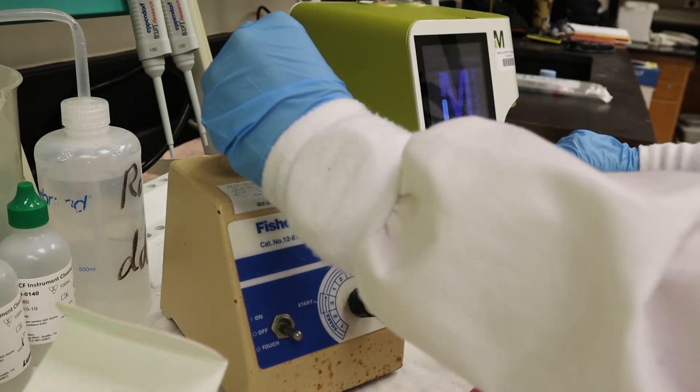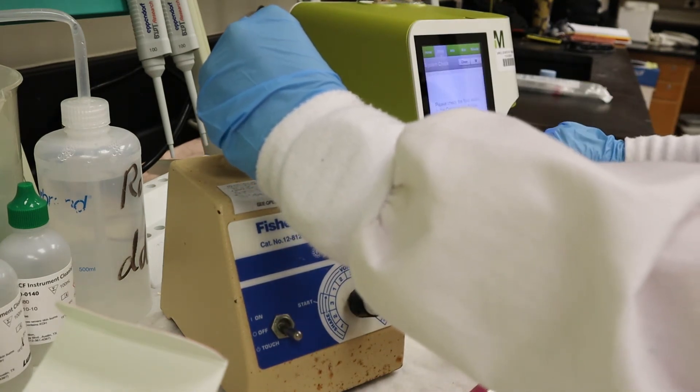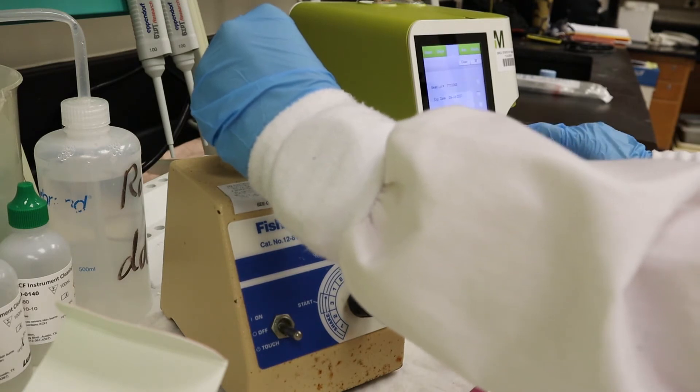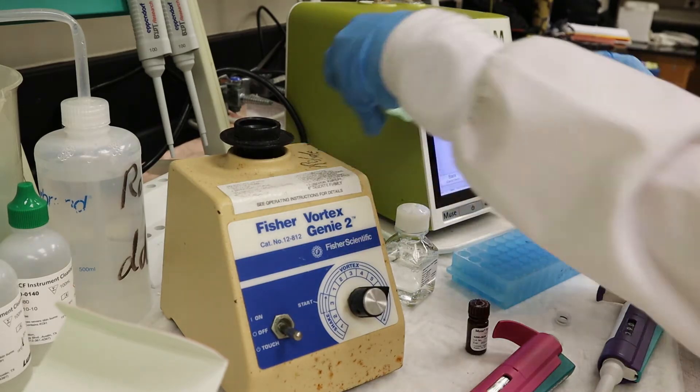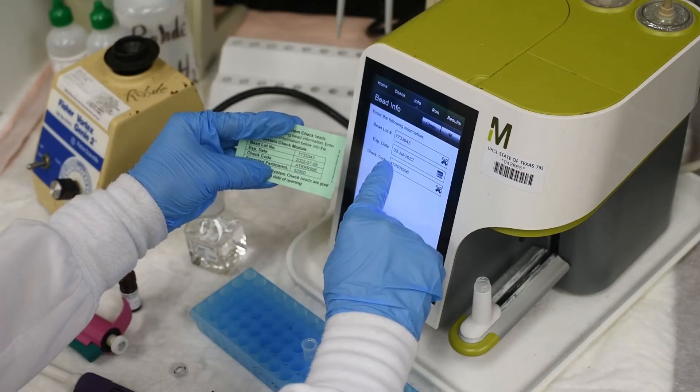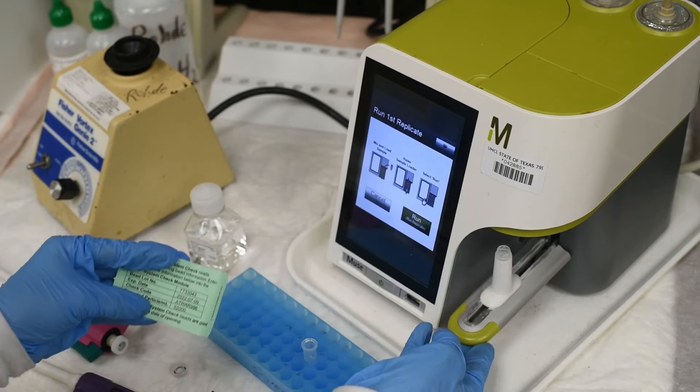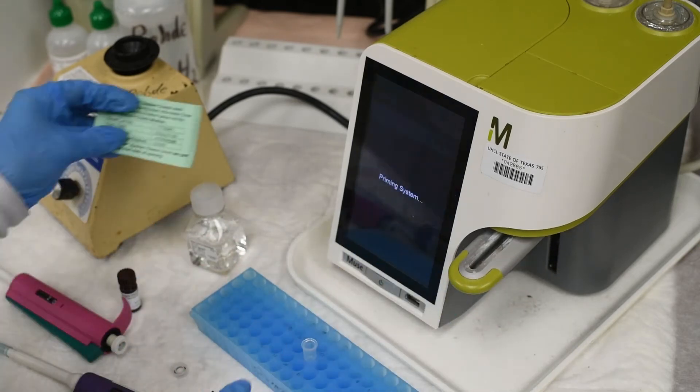Run the system check. In the dialog box, remove the cap from the tube and place it into the sample loader. The dialog window will ask for the lot information for the beads you are using. Make sure the information is correct before proceeding. Run the system check.